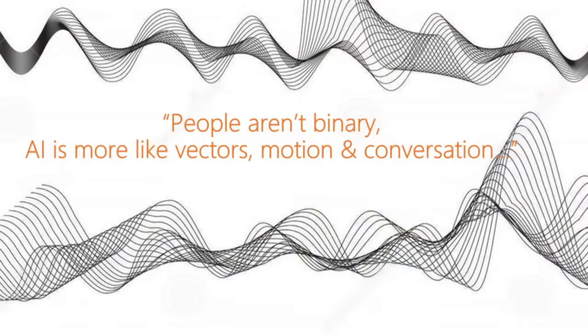People aren't actually binary. The way we started thinking about computer systems really needs to change. AI is a little bit more like vectors or motion. This is why conversation, I think, is such a great test case for us to see if we can get AI to work more the way humans think about the world around them.